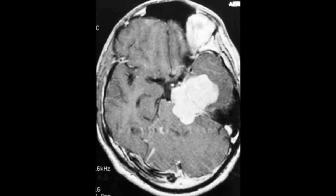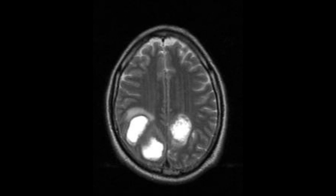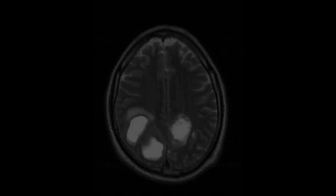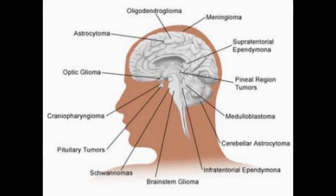Mixed gliomas are made up of more than one type of glial cell tumor and are only present in about 1% of all primary brain tumors. Non-glioma tumors are tumors that develop in cells in the brain that aren't glial cells. Types of non-glioma tumors include meningiomas, pituitary gland tumors, pineal region tumors, medulloblastoma, craniopharyngioma, and acoustic schwannoma.